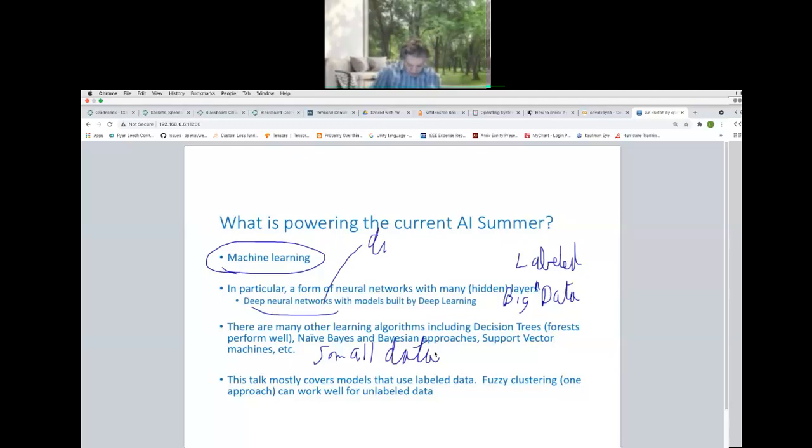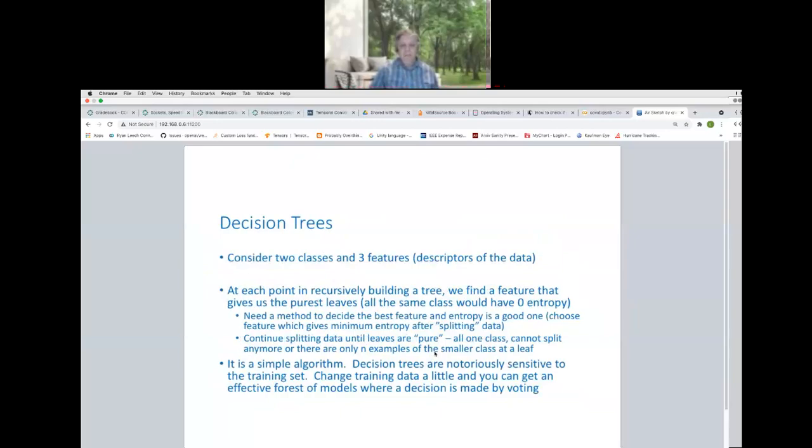One of the big reasons that deep neural networks are popular is they discover features. They can discover features for you. So it's important to know what are the features in a domain that differentiate two classes or three classes. And over time, people have developed research programs which are focused on finding the best features quickly. But deep neural networks will find them for you, which of course appeals to everybody because you don't have to do as much work.